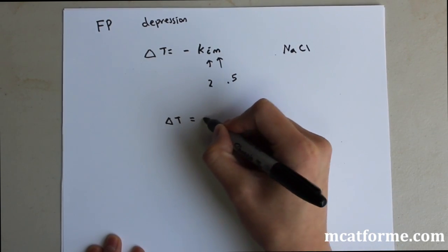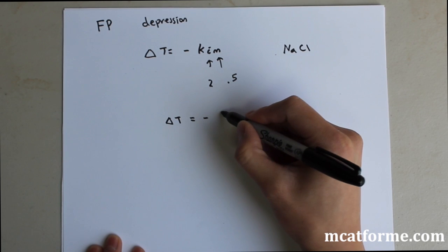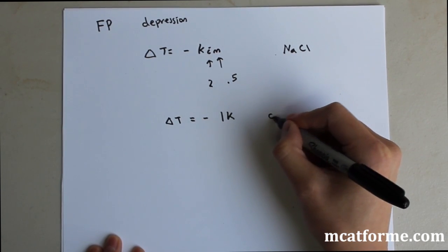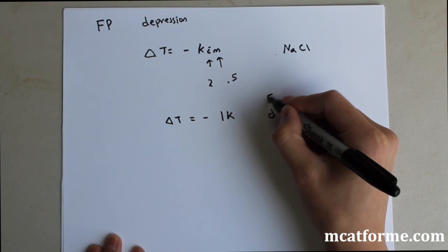That means delta T is going to be negative 1k. But it will just be a decrease. That's all that's important. The freezing point will decrease.